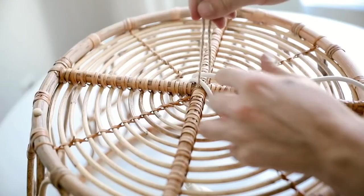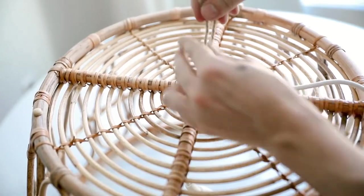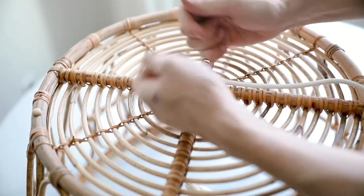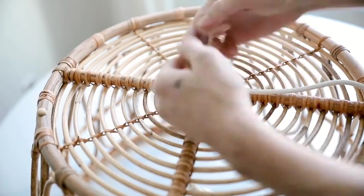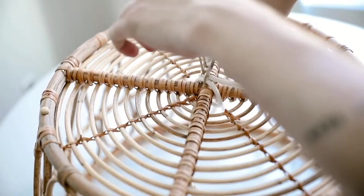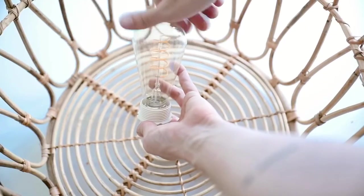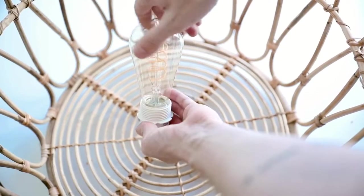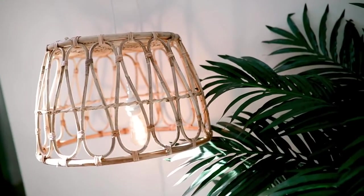I used a little bit of hemp cording up here just to kind of blend in and camouflage with the actual basket. I just tied it in a couple of knots that way it stayed nice and secure up there. Then I screwed in an Edison bulb and you have a perfect little hanging pendant light.